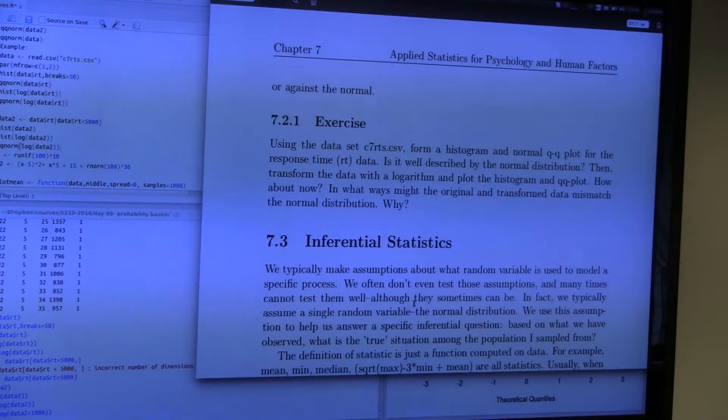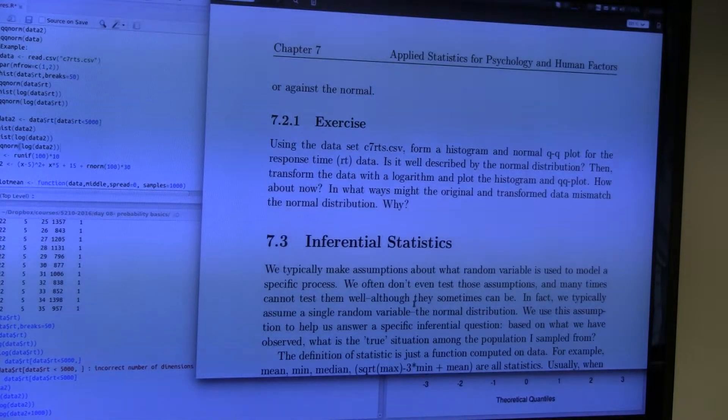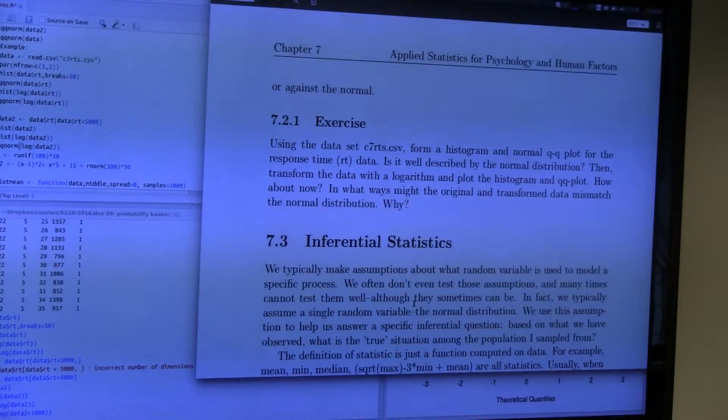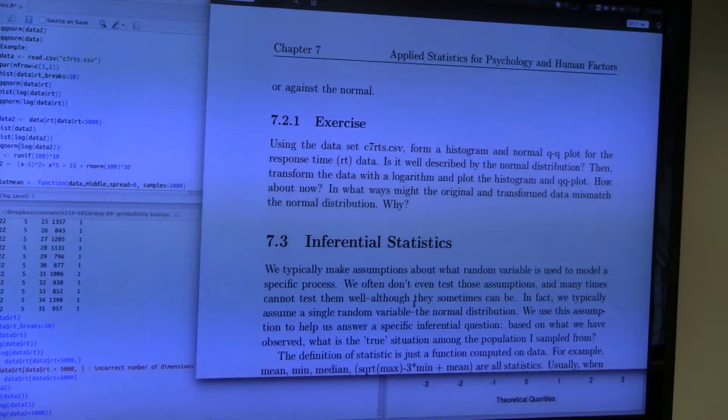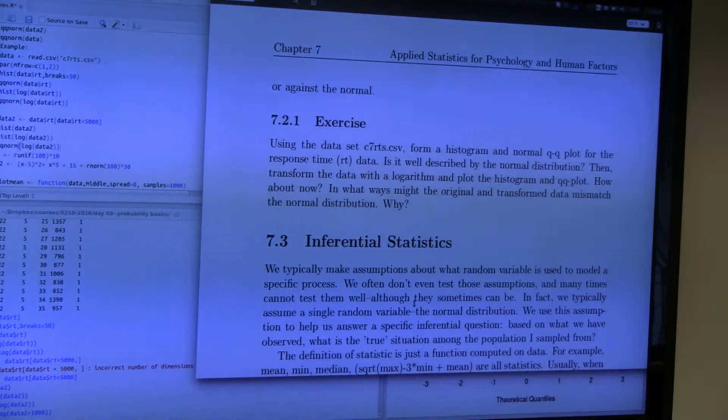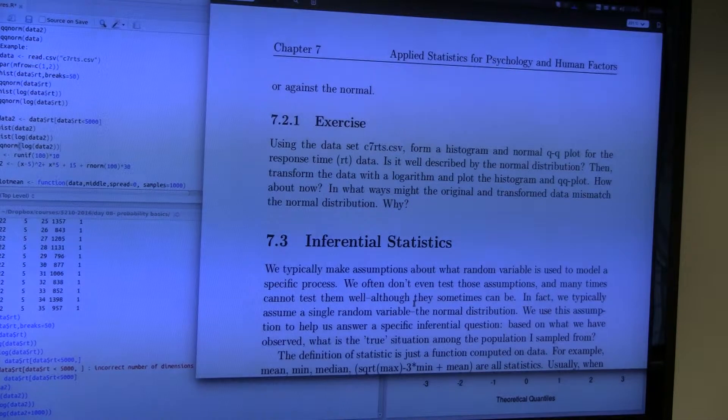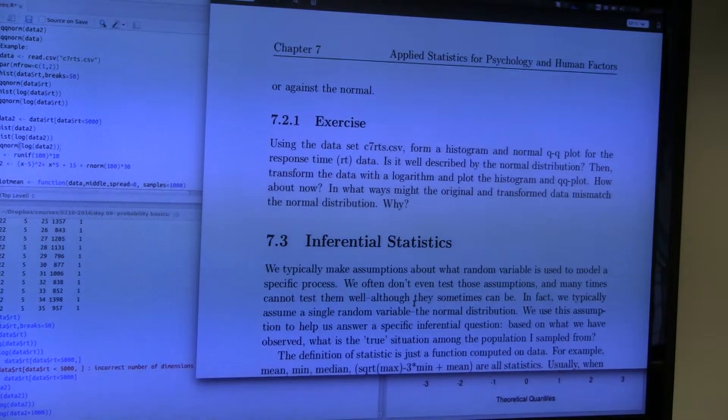But what we usually care about when we run a scientific study is not just the statistics in general, which tell you descriptively what happened. We care about making inferences. The reason why we have this random variable, which is a model of our data, is so that we can make inferences, and the inference goes like this.